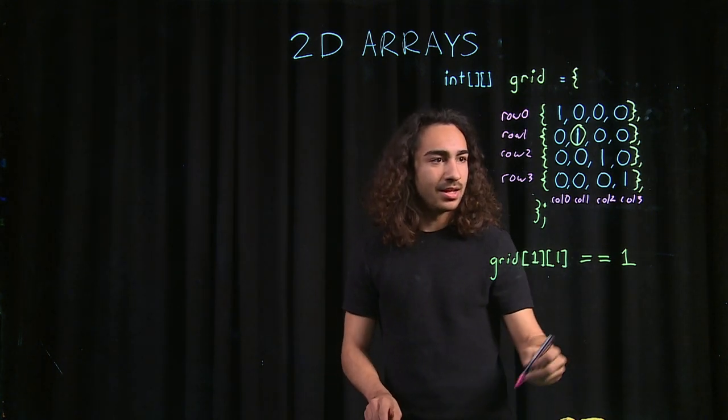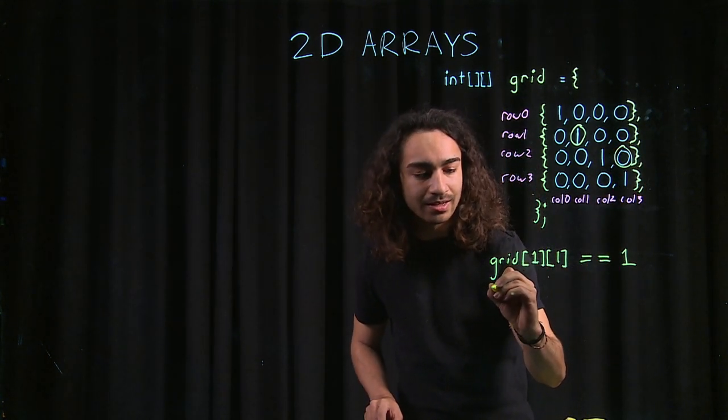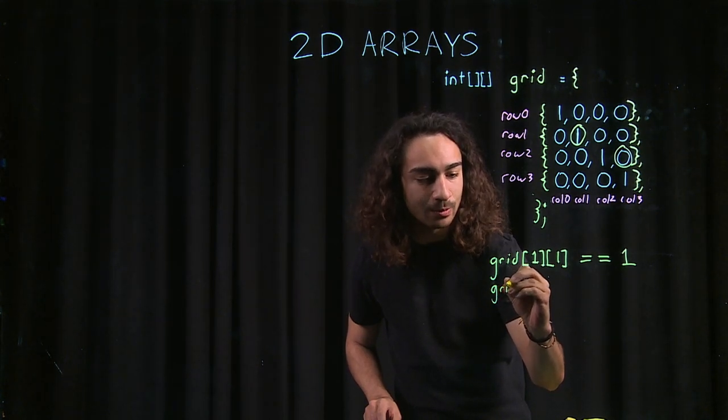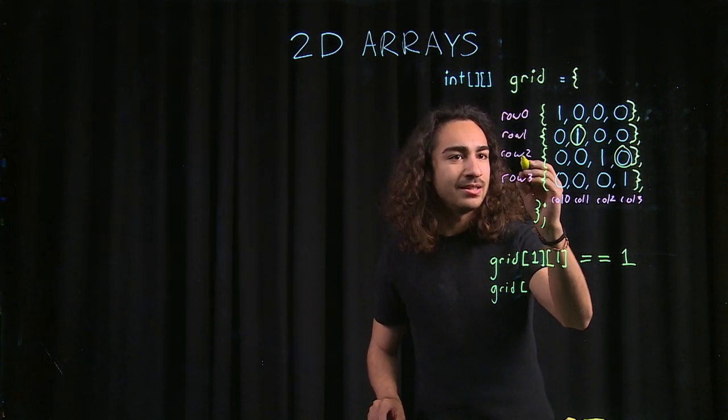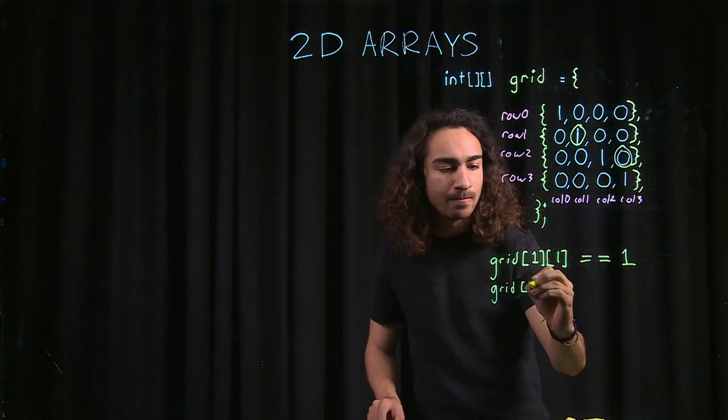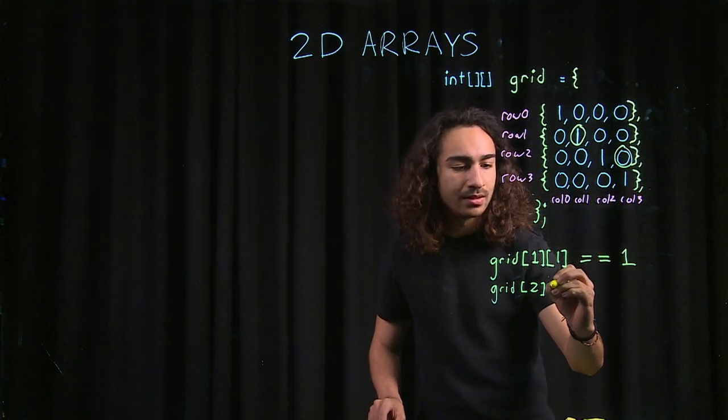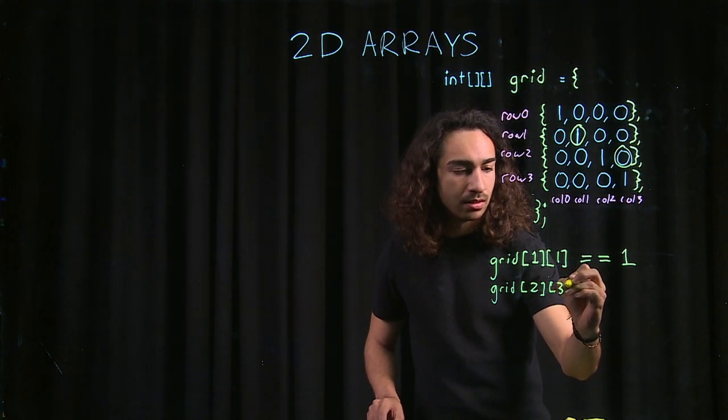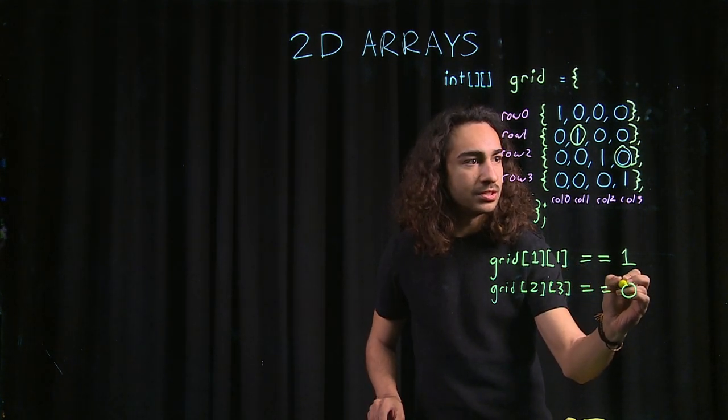Now, let's say I want this index. How would we do that? Okay, it would be the same. We call our array, and now we have to find out the row it's in. So, it would be row 2, and it would be column 3. And that should be equal to 0.